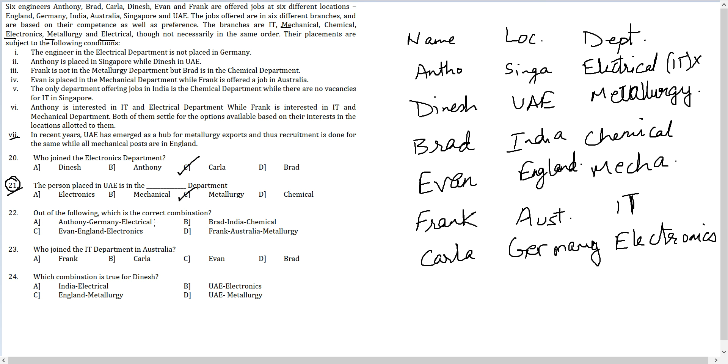Out of the following, which is the correct combination. Anthony Germany electrical? No. Brad India chemical? Yes. Brad India chemical is correct. For peace of mind also check the other two options. If the other two options are cancelled out, the likelihood of you having solved it correctly is higher. Evan England electronics? Wrong. Frank Australia metallurgy? Wrong.